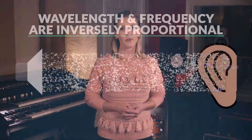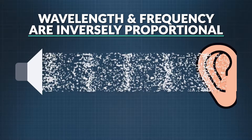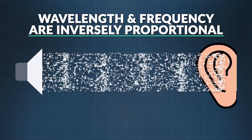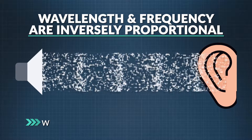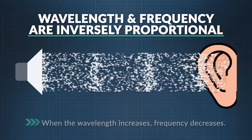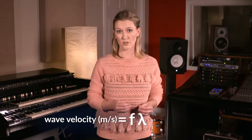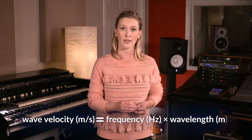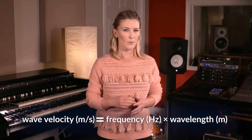Sound waves, like other longitudinal waves, behave in certain ways. When the velocity of the wave is constant, the wavelength and frequency are inversely proportional — when you increase one, you decrease the other. The relationship between these variables is: the velocity of the wave in meters per second equals the frequency in hertz times the wavelength in meters.